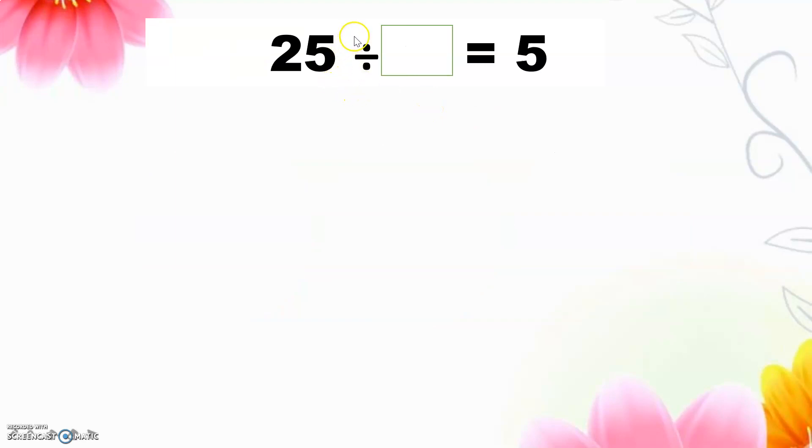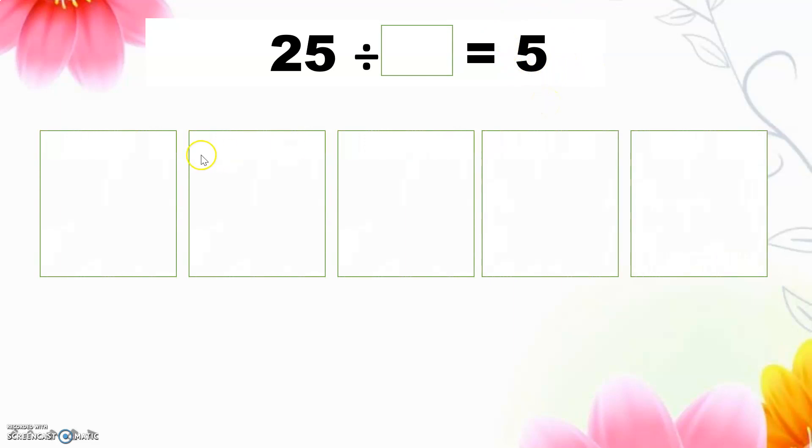25 divided, we don't know in a group how many objects. We will get 5 groups. As usual, we will do 5 groups first. 1, 2, 3, 4, 5. And then we divided 25 equally to each group. There are 5 groups. We should share equally 25 to 5 groups.